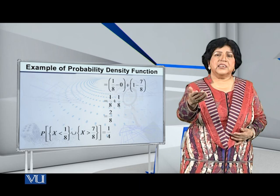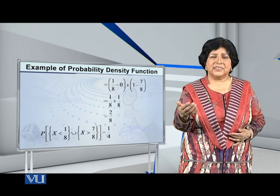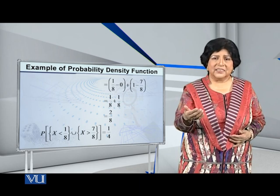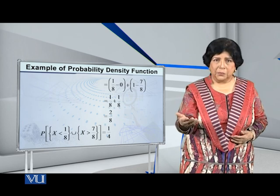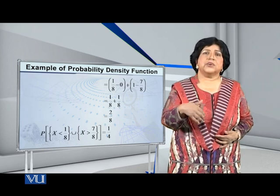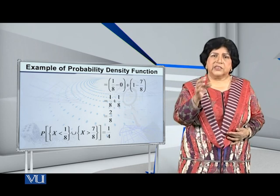Solving this: one-eighth plus one-eighth, that is two-eighths, that is one-quarter. So, this is the required probability.